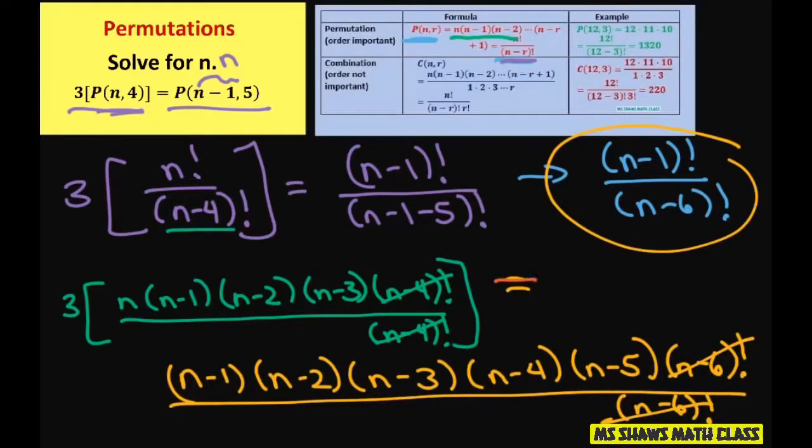Now remember this is an equal, so now let's see if we can cancel anything out. We can cancel these two out. These two and these two. So on the left hand side, we're going to have n minus 4 and n minus 5.